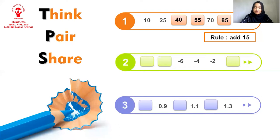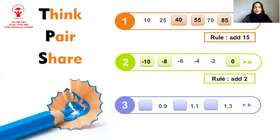Let's move to number two. What do you think is the first term? Yes, it's negative 10. And next, it's negative 8. And we have negative 6, negative 4, negative 2. And what do you think is the last number? Yes, it's 0. So what's the rule of this sequence? The rule is add 2. You need to add 2 to negative 10, so negative 10 plus 2 gives negative 8, and so on to the next term.